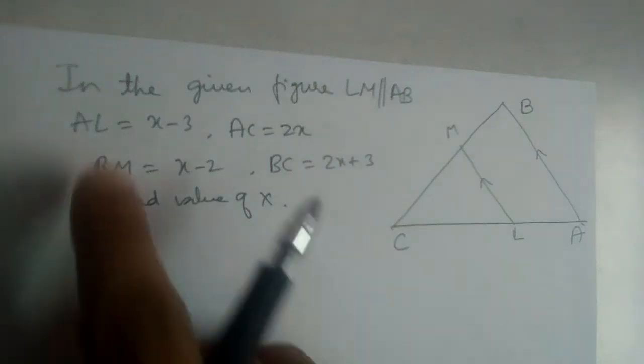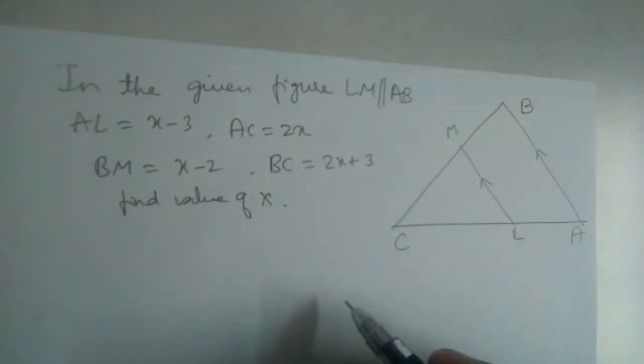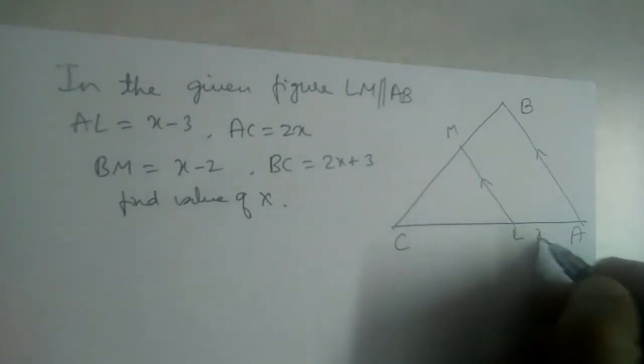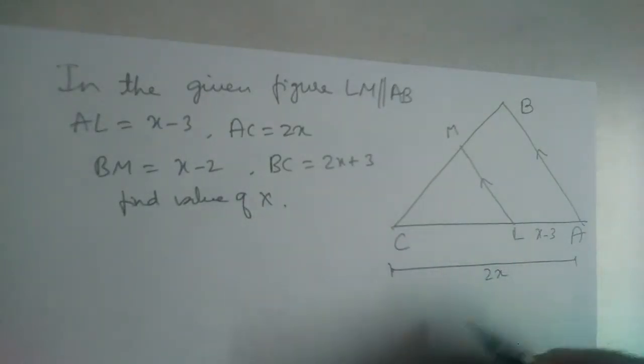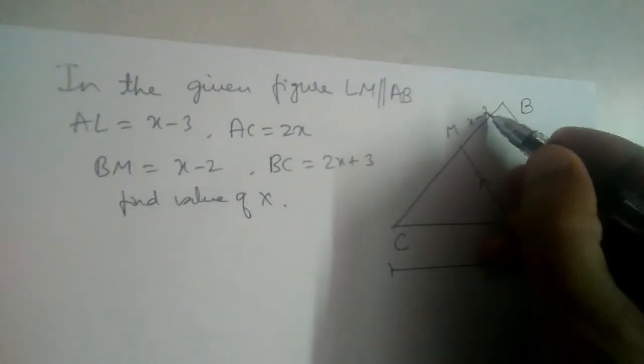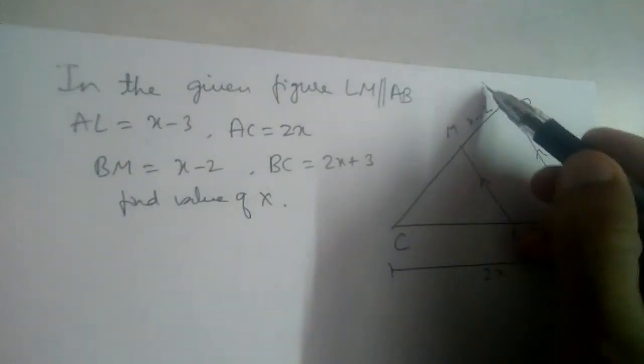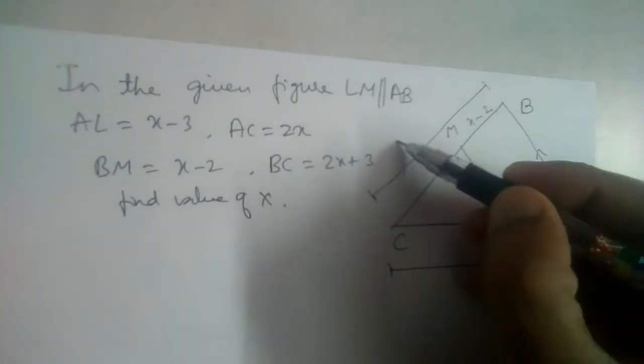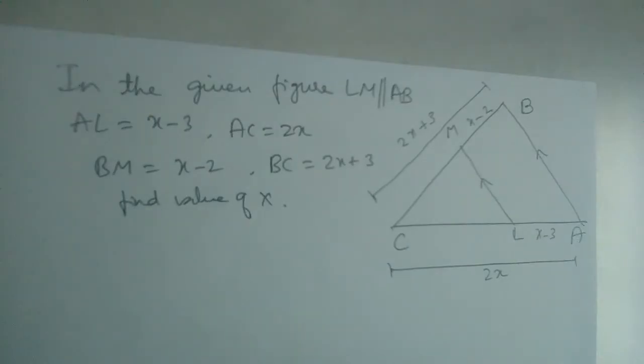Okay, we have this problem here. In the given figure, LM is parallel to AB, and AL is x minus 3. AC is 2x, this complete side is 2x, right? And BM is x minus 2, this is x minus 2. And BC is 2x plus 3, this BC complete thing is 2x plus 3. Find the value of x.